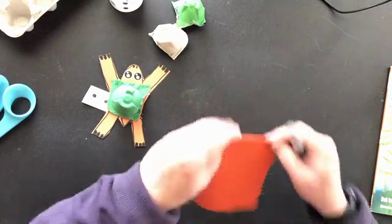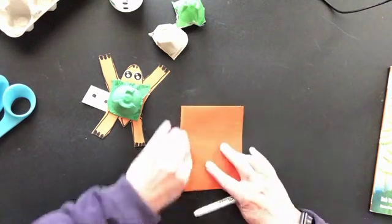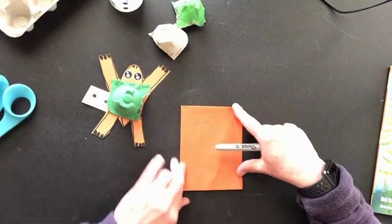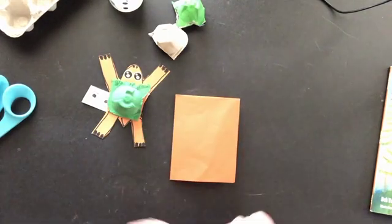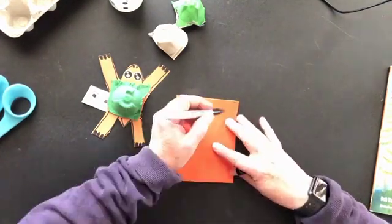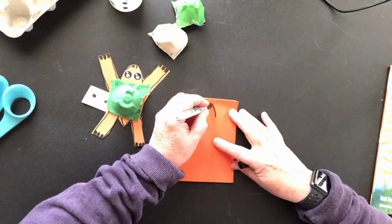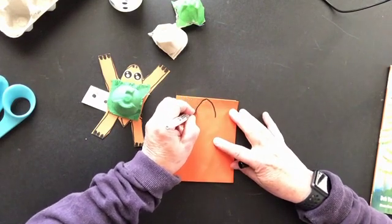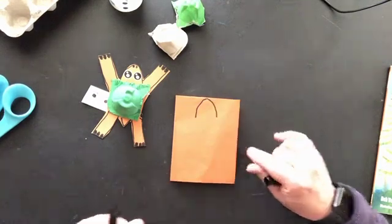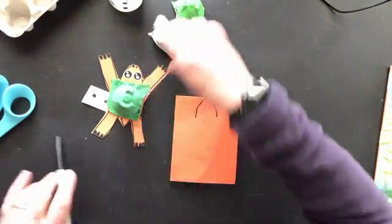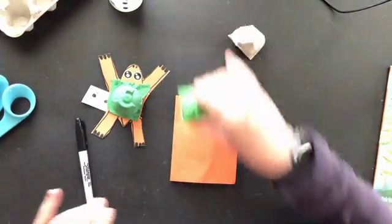So why don't we fold it again so that it can be a good size for the egg carton which we're going to be using for our shell. Okay, so then what we're going to do right here up at the top is we're going to draw a half of an oval like that. Okay, and before we start drawing the actual turtle, what we should do is the egg carton shell that we're going to use.